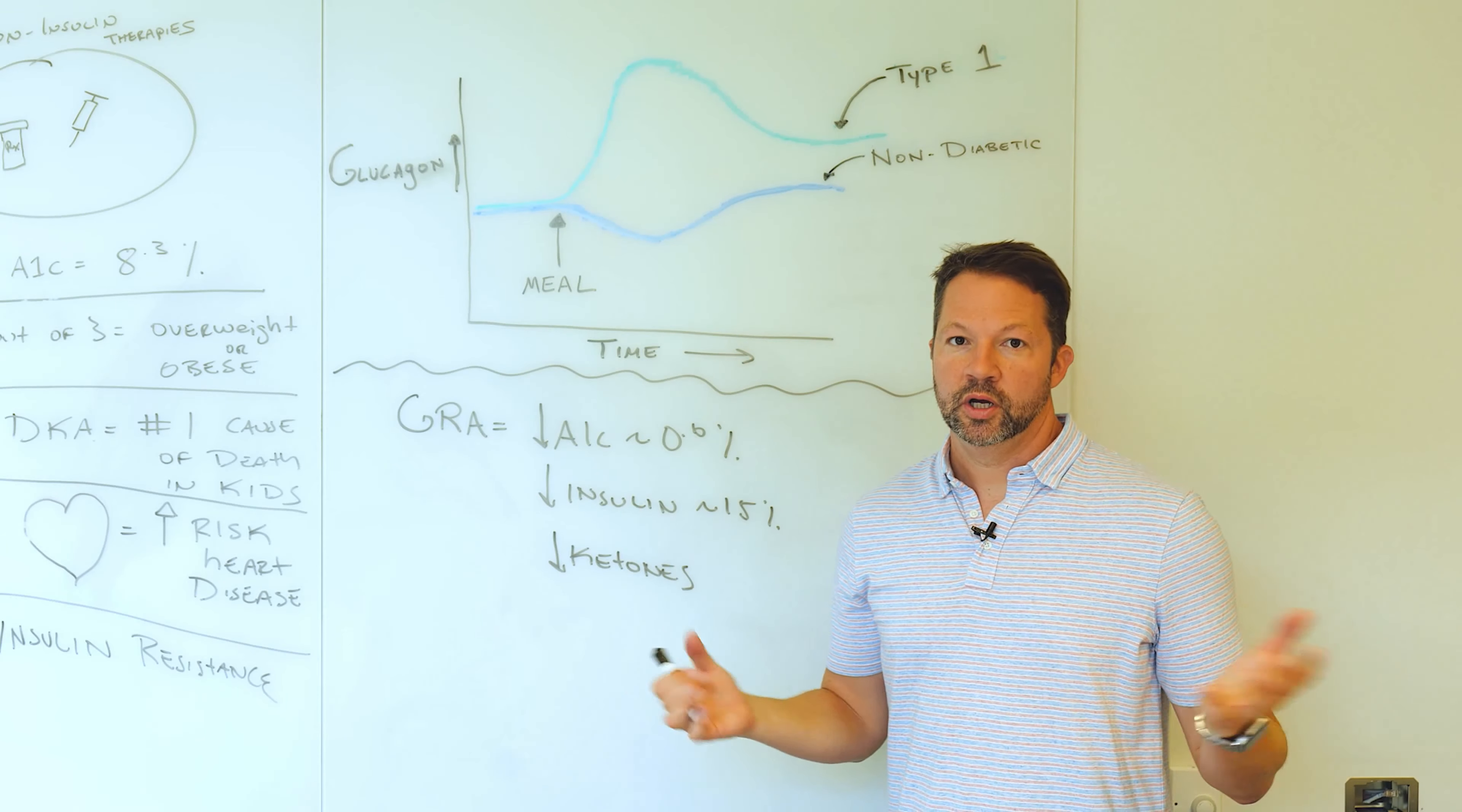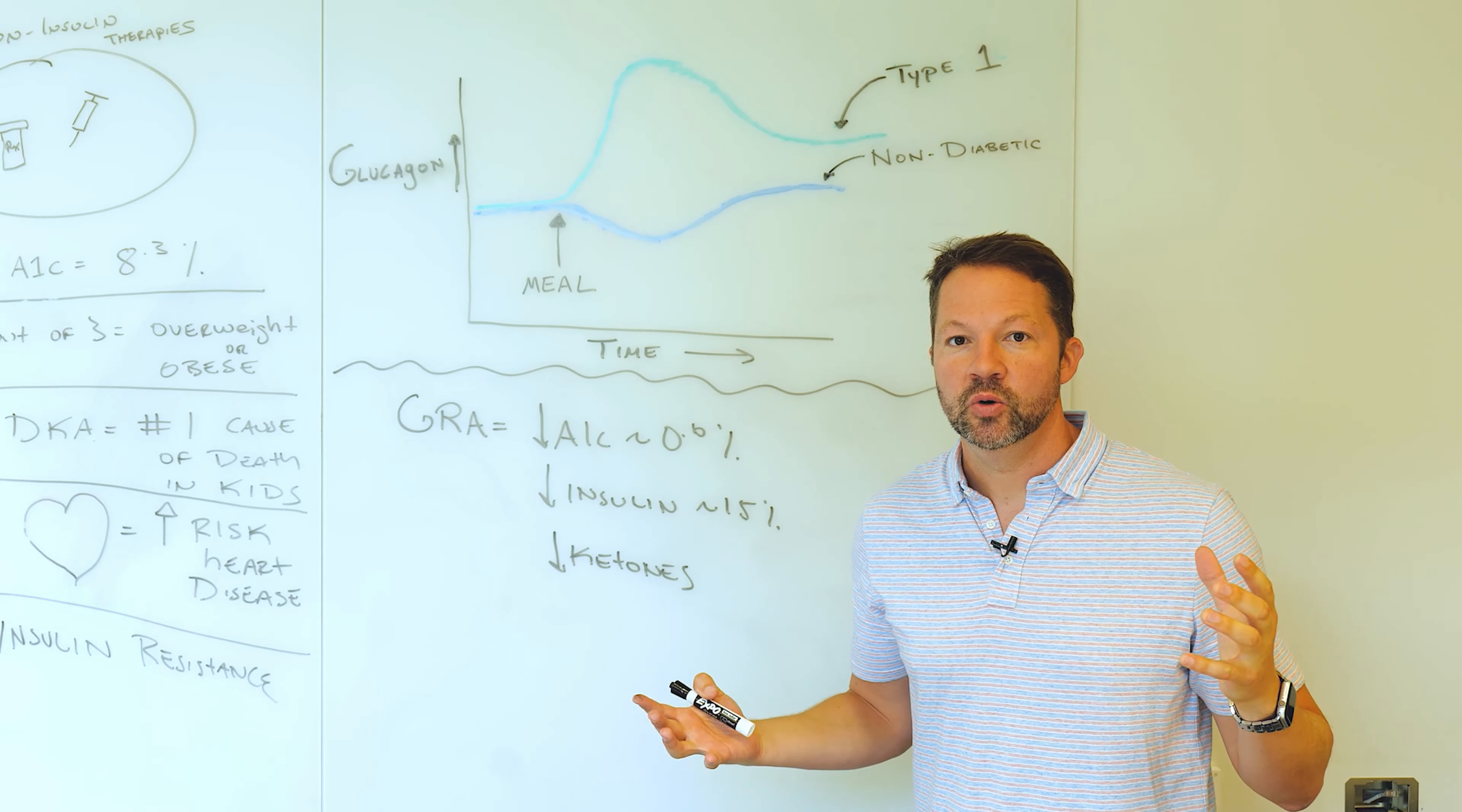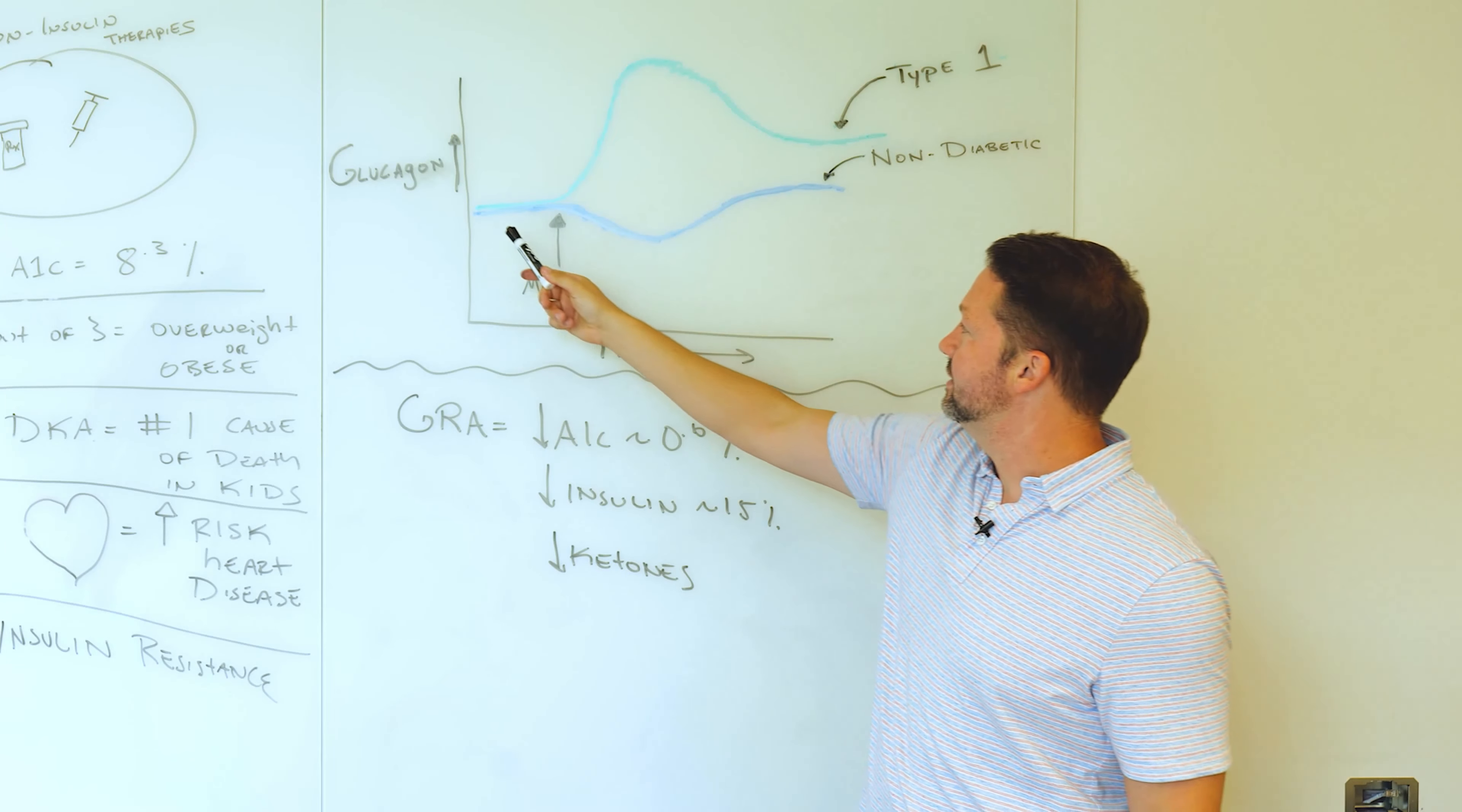So what's the problem with glucagon? Well, glucagon is secreted by something called the alpha cell, which is right next to the beta cell in the pancreas. And when the beta cells get destroyed, the alpha cells basically don't know what to do. And they secrete glucagon in a real haphazard manner. So as I mentioned, glucagon normally increases your blood sugar.